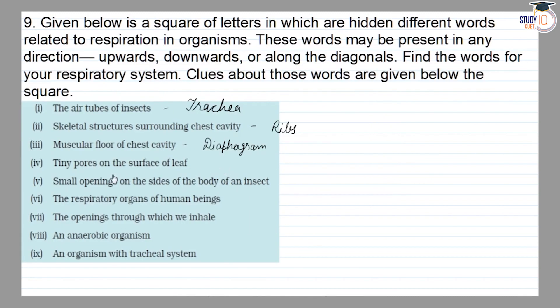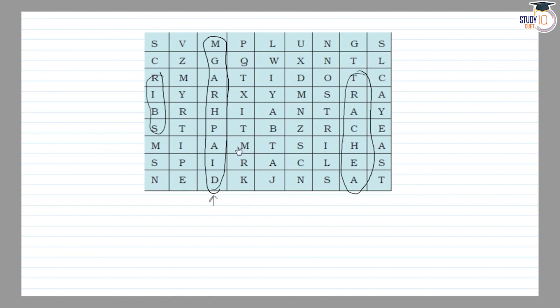Acquired. The next is tiny pores on the surface of leaves. It's stomata. Where is stomata? This is here.